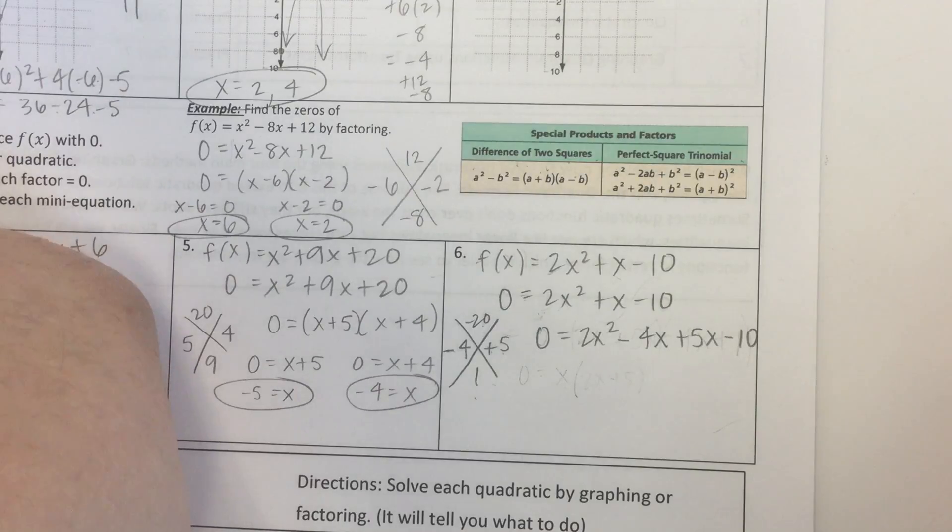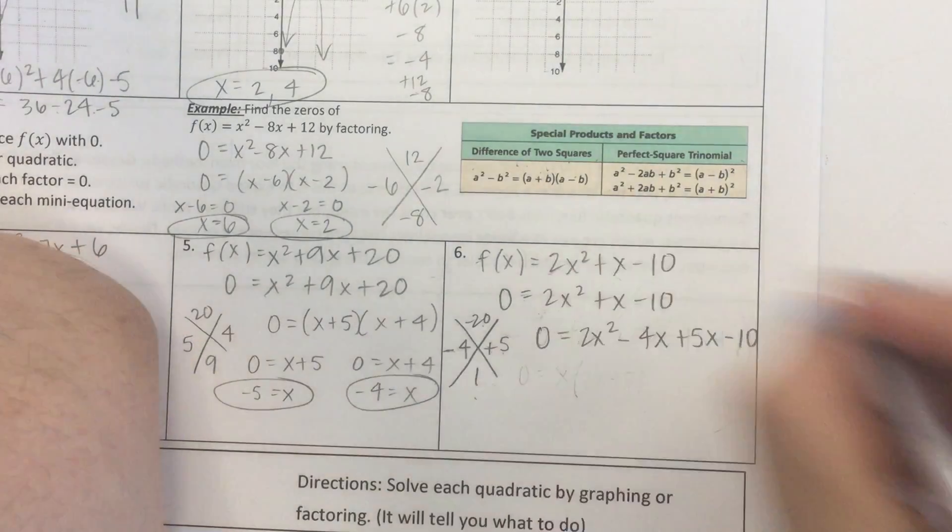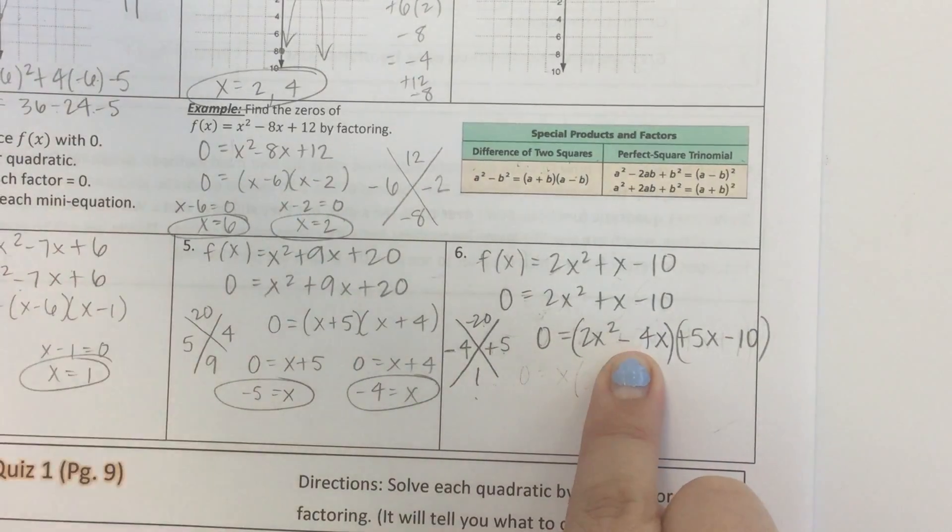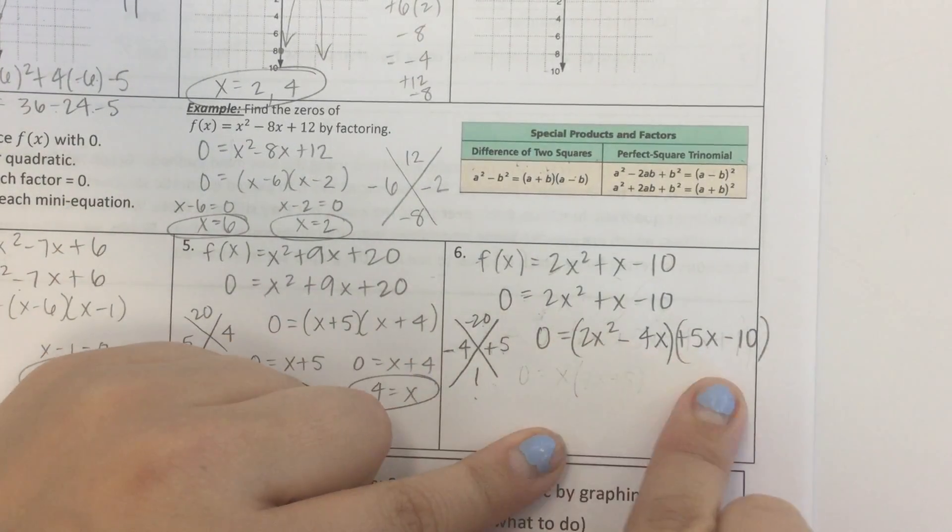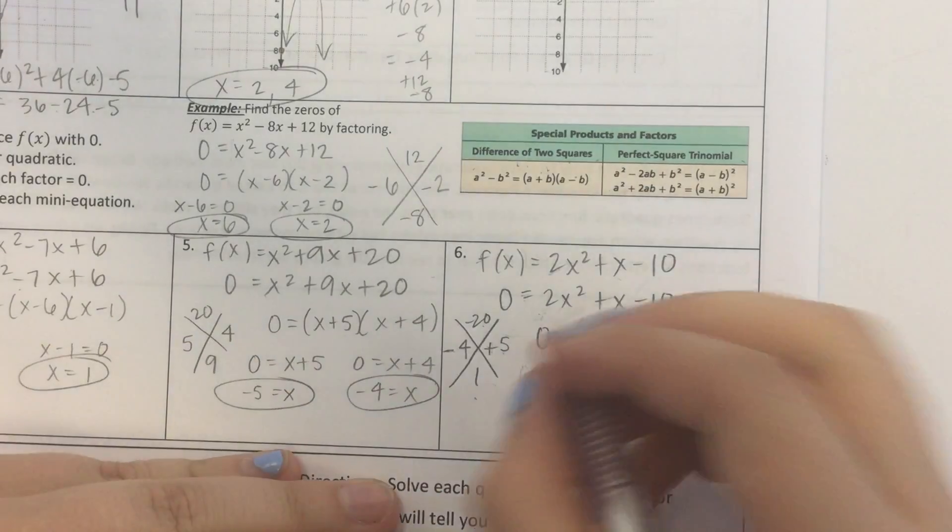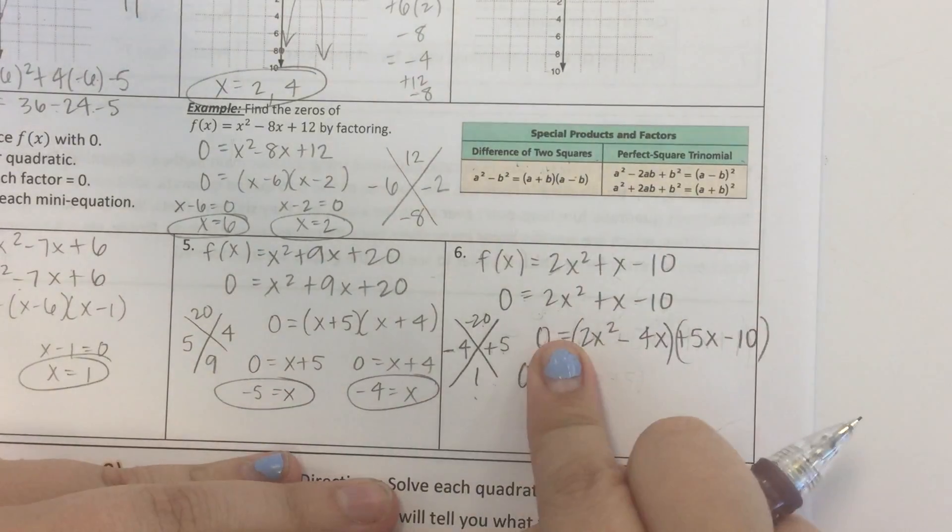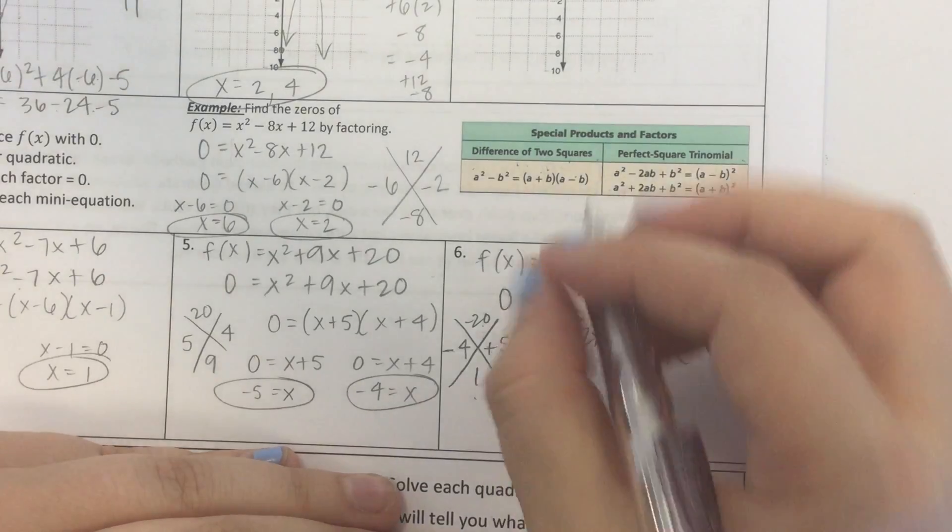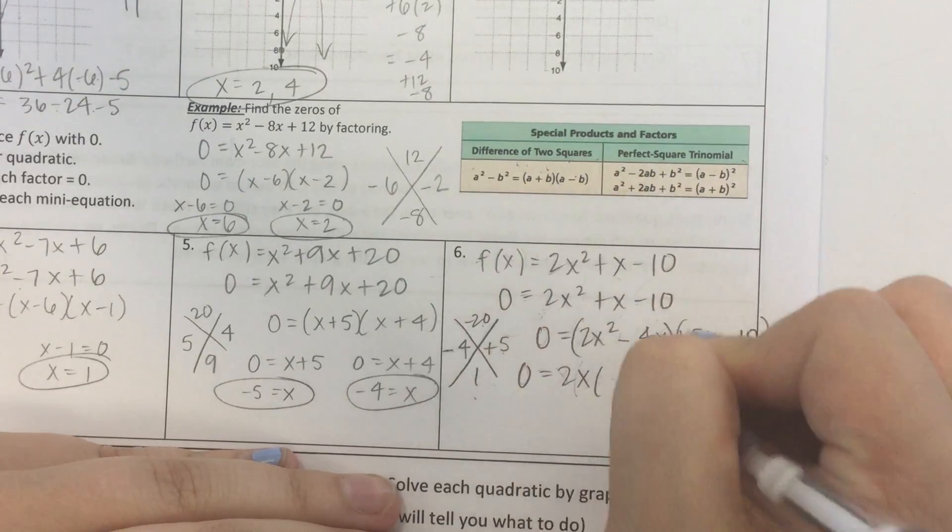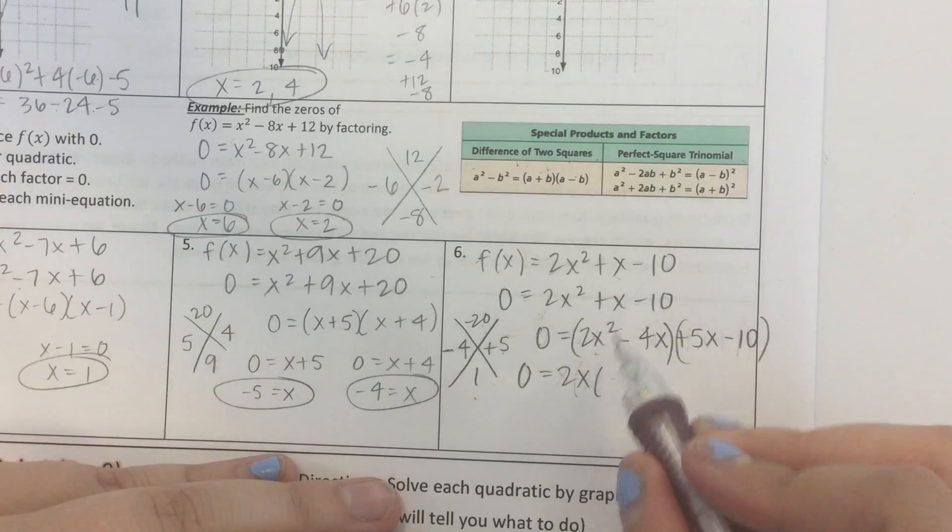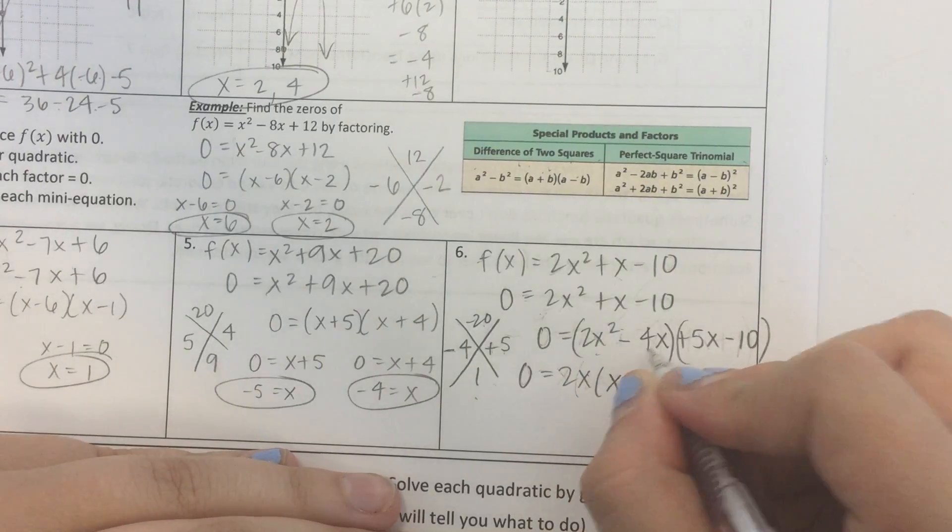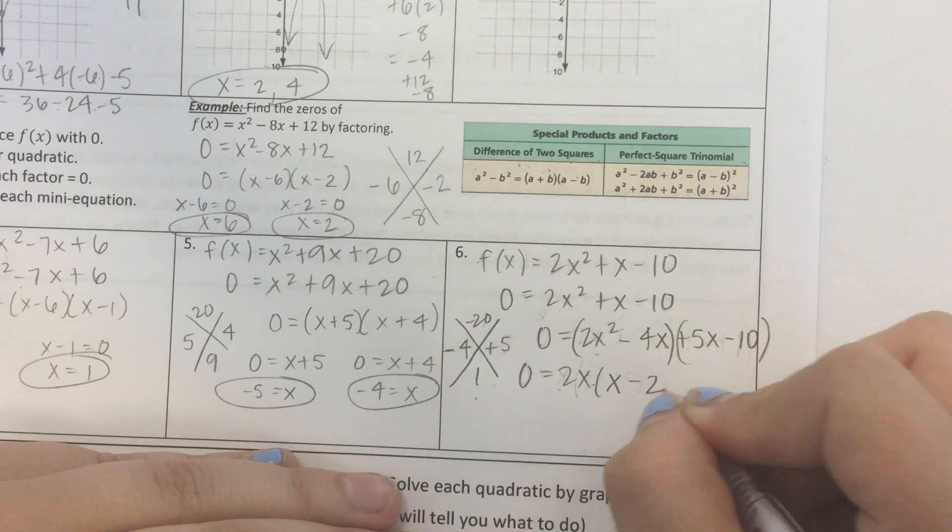Alright, so we're going to factor by grouping. We're going to make a group here and a group here. We're going to take out the greatest common factor from each of these two groups. So let's do that. What does 2x squared and minus 4x have in common? 2x. Now, 2x squared divided by 2x, well that just gives me 1x left. 4x divided by 2x is 2.